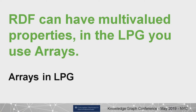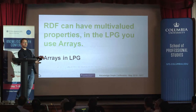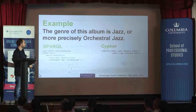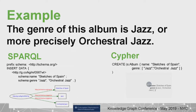Another difference: RDF can naturally have multivalued properties. It's perfectly fine to have triples with the same subject and predicate but different literal values for the object. In the property graph, the internal structure is a map, so you can have only one key. The way to have multiple values is by using arrays — for example, a record with a name that has two genres: jazz and orchestral jazz.